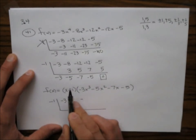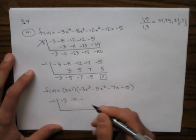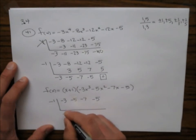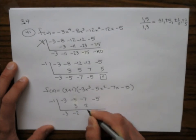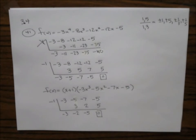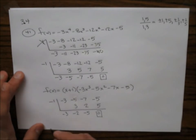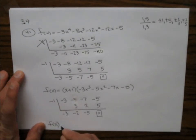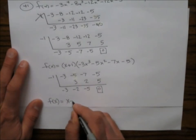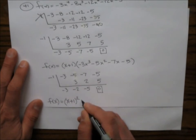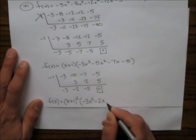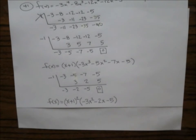Writing the coefficients: negative 3, negative 5, negative 7, and negative 5. Let's do synthetic division. Negative 3 drops down, multiply and add, multiply and add, multiply — I get a remainder of 0. So this thing factors again. We have f of x equals x plus 1 squared times negative 3x squared minus 2x minus 5.